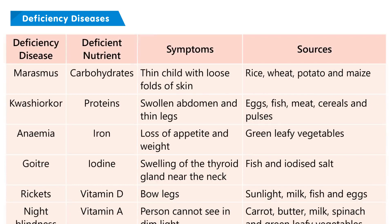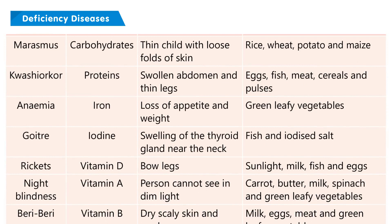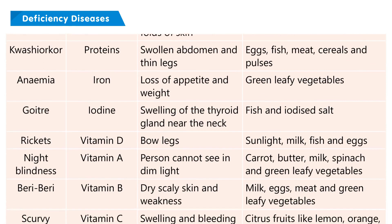Marasmus: deficient nutrient — carbohydrates; symptoms — thin child with loose folds of skin; sources — rice, wheat, potato, and maize.